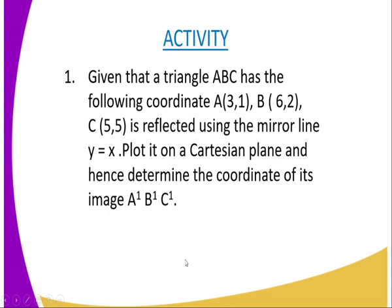We have come to the end of today's lesson, and I'm going to give you the following assignment. It is only one question. You are told: given that the triangle ABC has the following coordinates—the coordinates of A is (3,1), and the coordinates of B is (6,2), and the coordinates of C is (5,5)—is reflected using mirror line Y equals X. Plot it on a Cartesian plane and hence determine the coordinates of its image.